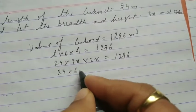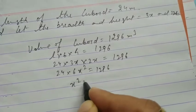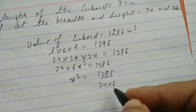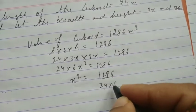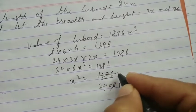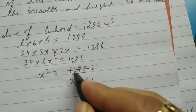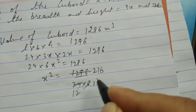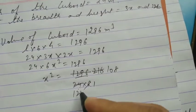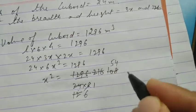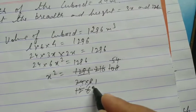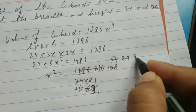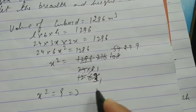So 3 into 2 is 6, x into x is x squared. 24 into 6 goes into 1296. We divide 1296 by 24 into 6: 6 ones are 6, 6 into 12 with carry. 24 into 216: 12 into 24, 54 into 108, 27 into 54, 3 ones are 3, 9 into 27. So x squared equals 9, and the square root of 9 is 3. Therefore x equals 3.